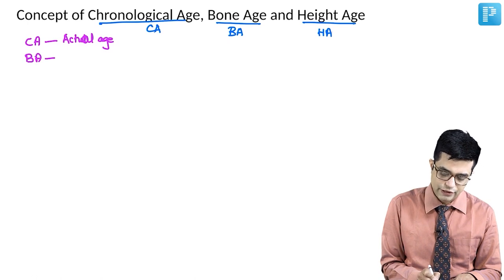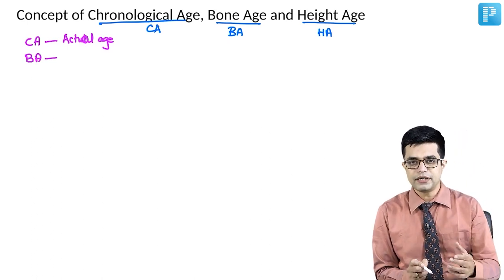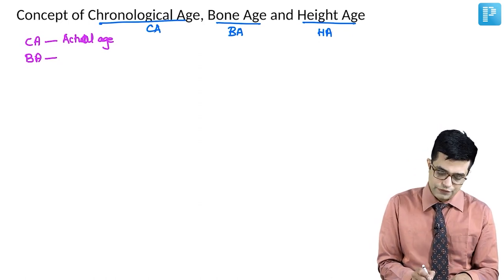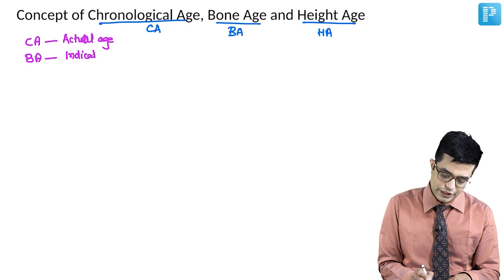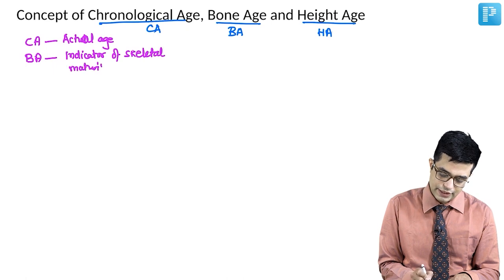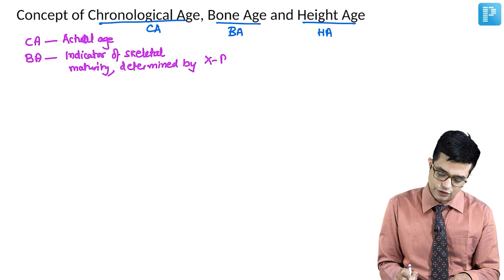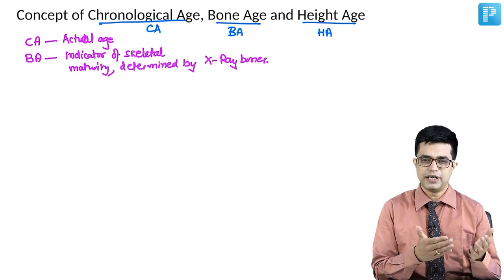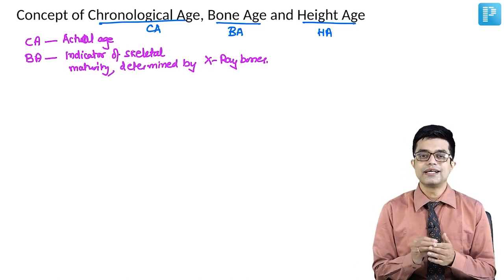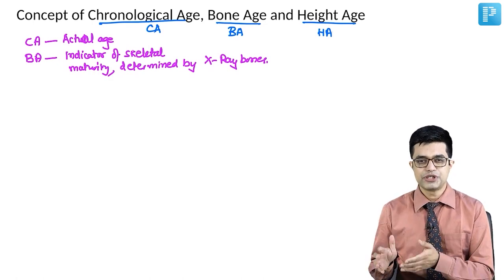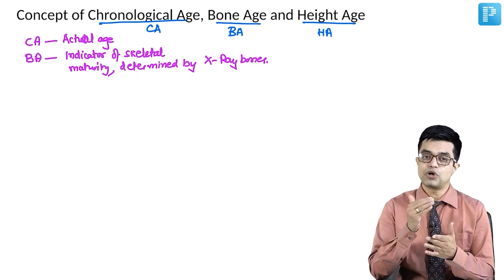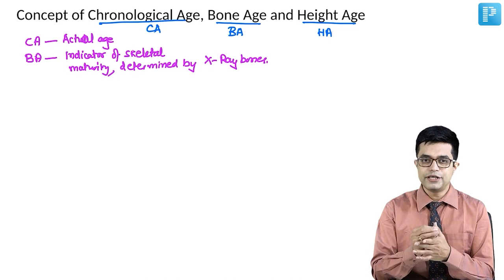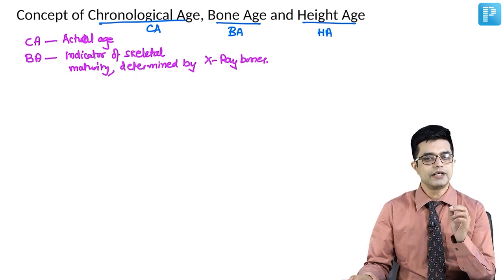What is bone age? Bone age is an indicator of skeletal maturity as determined by x-ray of the bones. What we do is take an x-ray of the bone, and depending upon the age, different bones can be used. You look at the number of ossification centres, then take the help of charts and calculate the age based upon the x-ray. It is not the actual age — it is the age based upon the x-ray of the child, and that is an indicator of skeletal maturity.